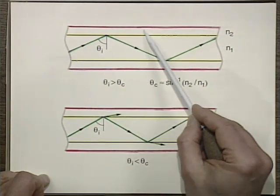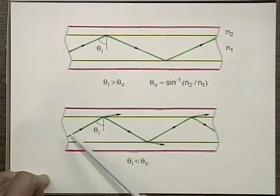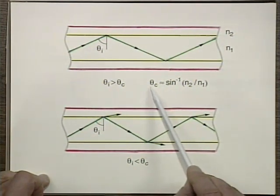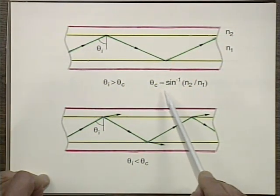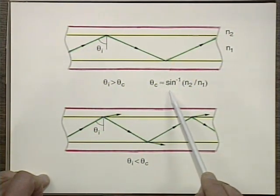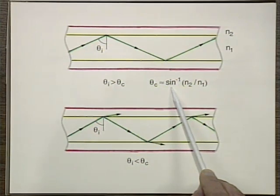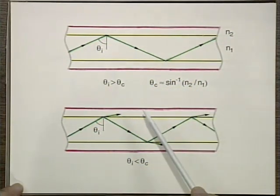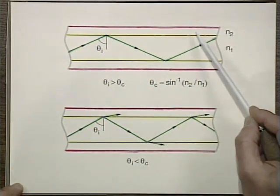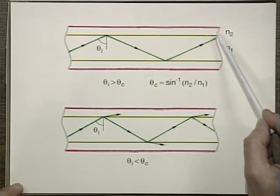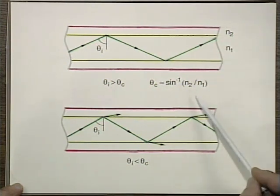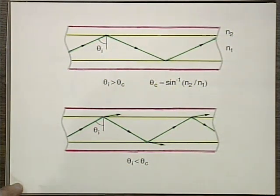It's just like going from glass to air. The critical angle is given, as we remember from high school, as sine to the minus 1 of N2 over N1, where N2 is the smaller index and N1 is the bigger one.